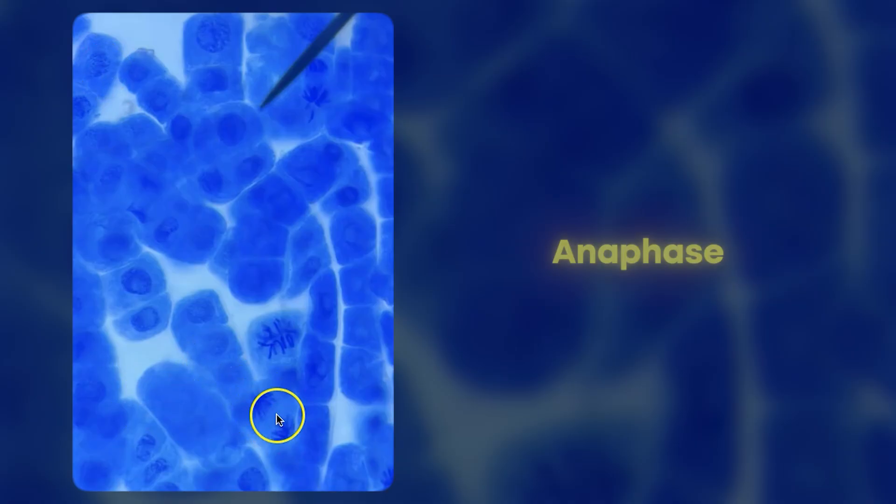All of these where you can't see the individual chromosomes, it looks a bit like a blurry, shady part, that would be interphase. Whereas this here is a cell in mitosis in anaphase, because we can see the chromatids have been pulled to opposite poles. This one here is in metaphase, we can see those chromosomes lining up at the equator.